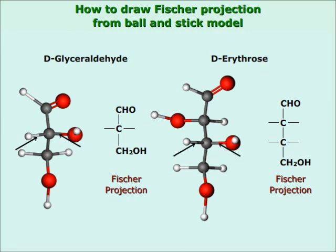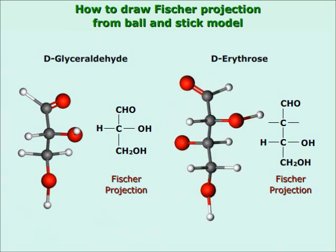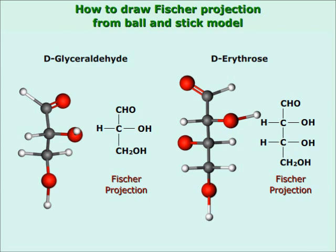The rule says the horizontal groups should point towards the viewer. These bonds are indeed pointing towards the viewer, so these groups get the same position in the Fischer projection. Now these groups are pointing backwards — this will not serve the purpose. So it is rotated such that the groups point towards the viewer. This position is taken for the Fischer projection. Finally, remove the C atoms and we get the Fischer projection.